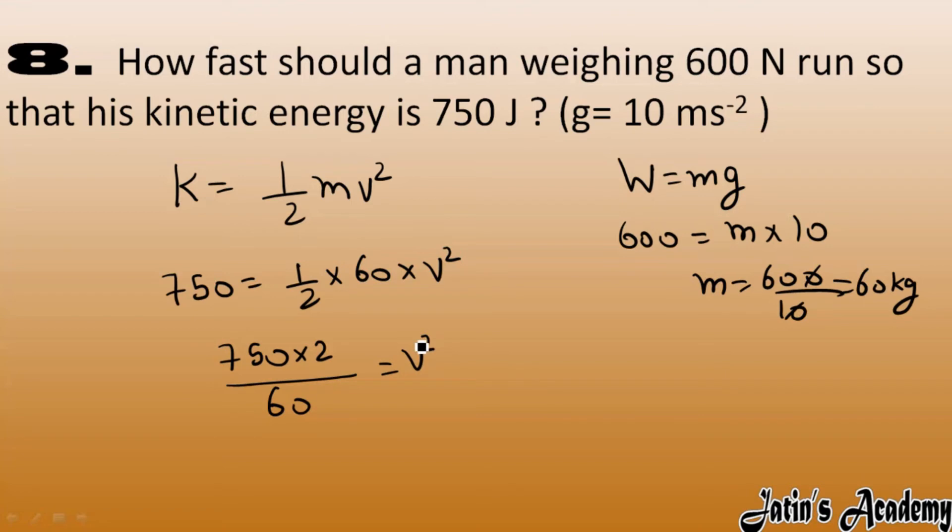Now cancel it out. What we will get, so here it is cancelled with 2 with 3, and it is cancelled with 25. So v squared we got as 25, which is v equals to under root 25.